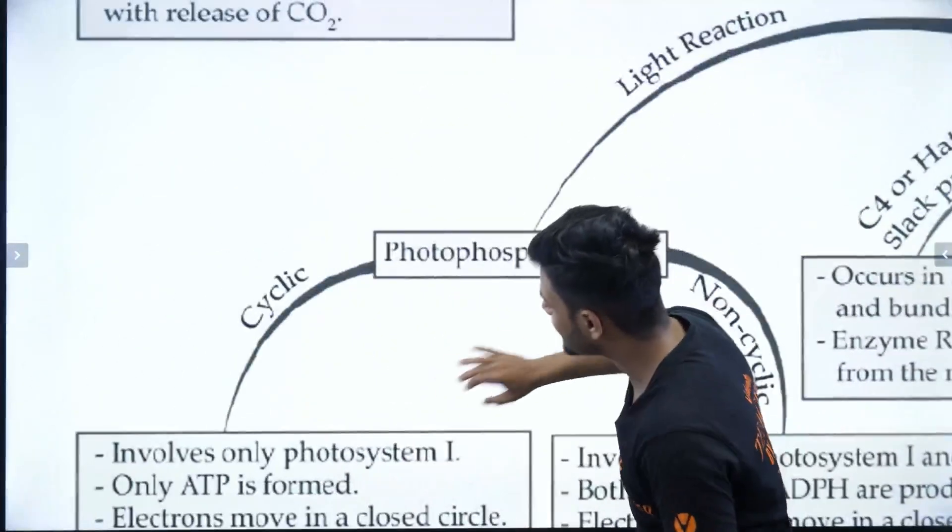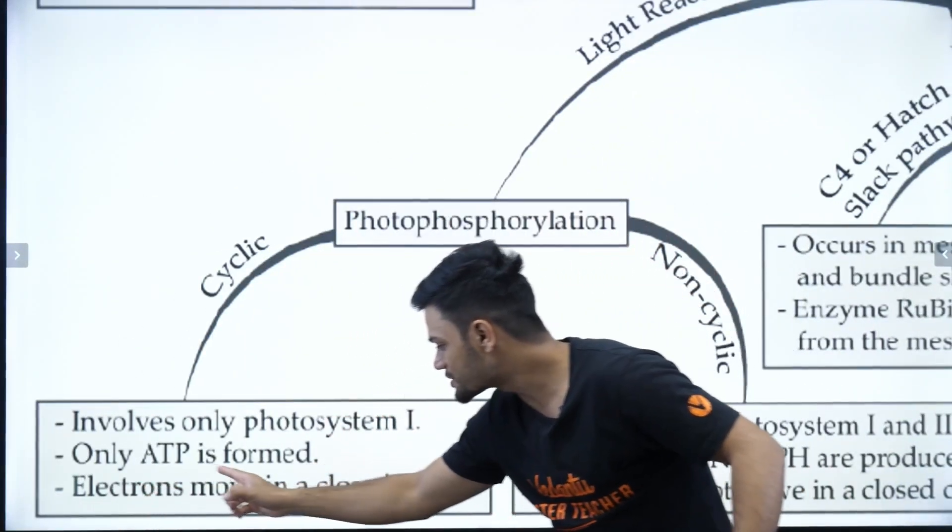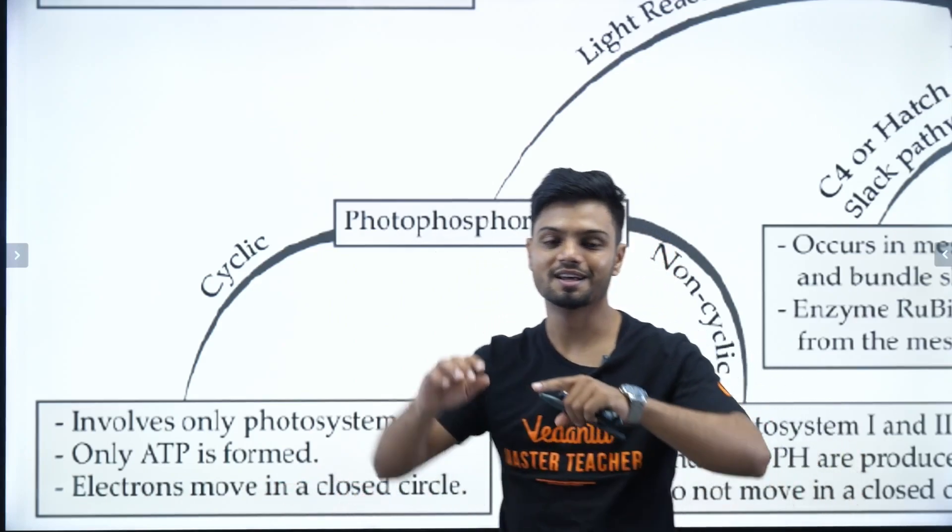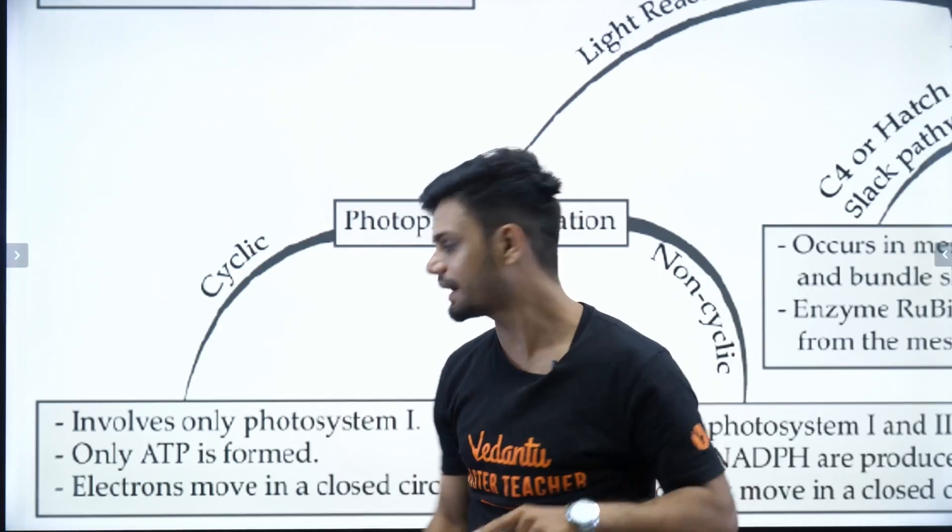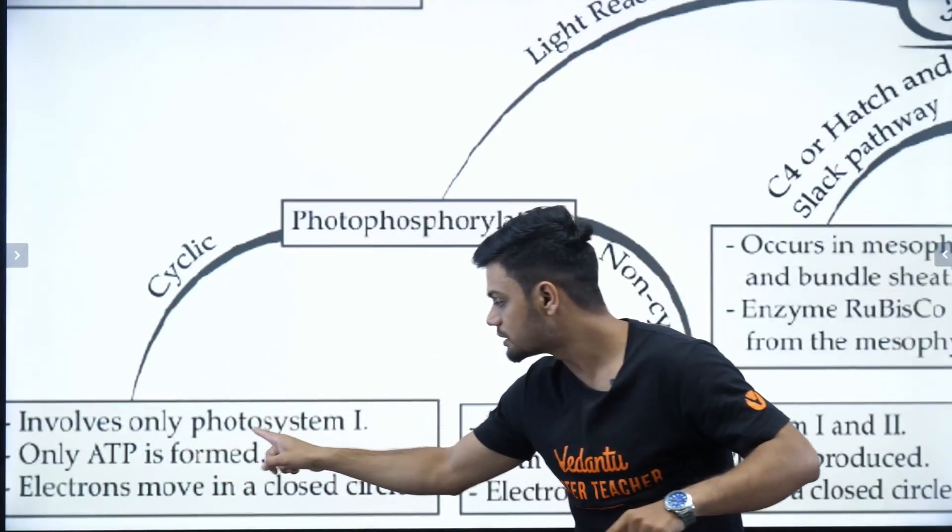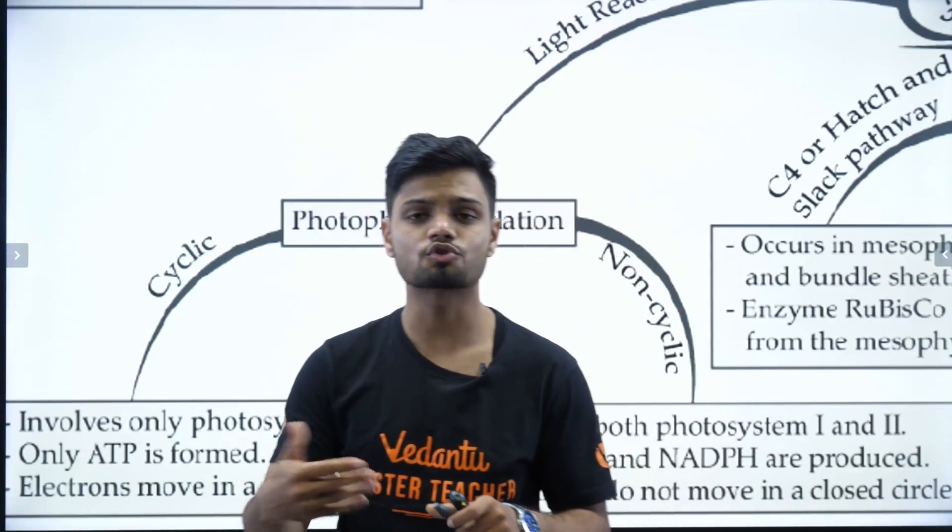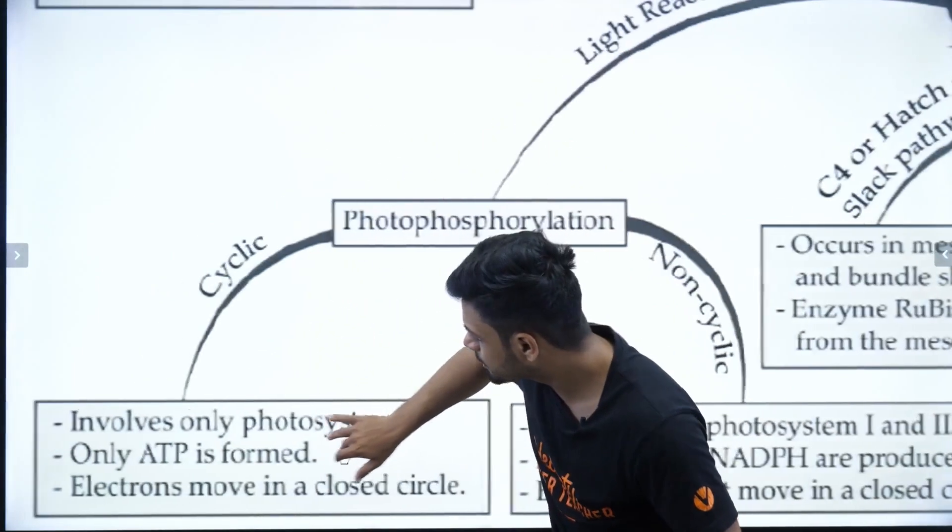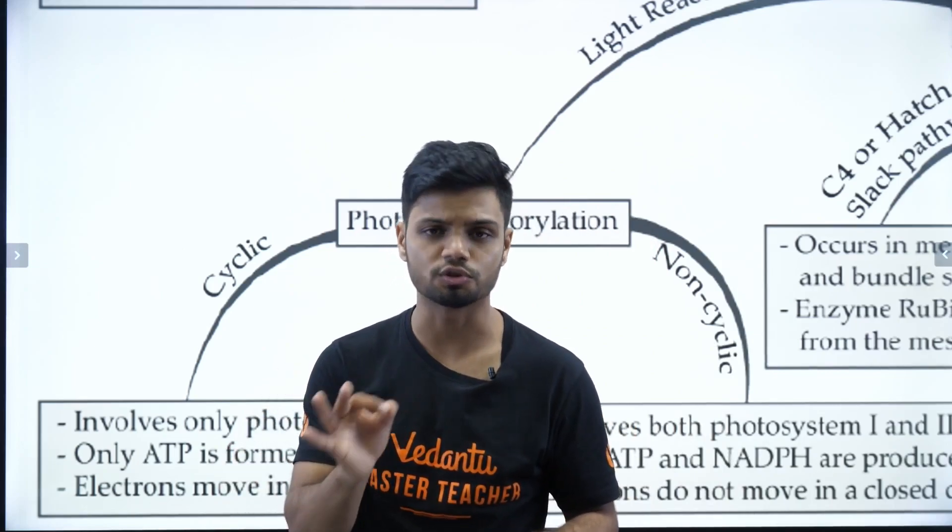Then we have cyclic reaction. Obviously, the main thing here is, electrons move in a closed circle. So, it is a complete circle here. That is, electrons are being sent back. Then, it only involves photosystem 1. Only one system is involved here. That is, your stroma lamellae. Then we have here, only ATP is formed. There is no NADPH production here.